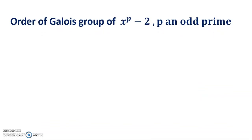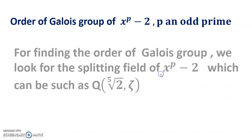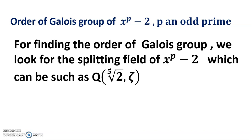Hello, dear friends. Welcome to my channel. Today's discussion is the order of the Galois group of x to the power p minus 2, where p is an odd prime. For finding the order of this Galois group, we look for the splitting field of x^(p) - 2, which can be written as ℚ(2^(1/p), ξ).